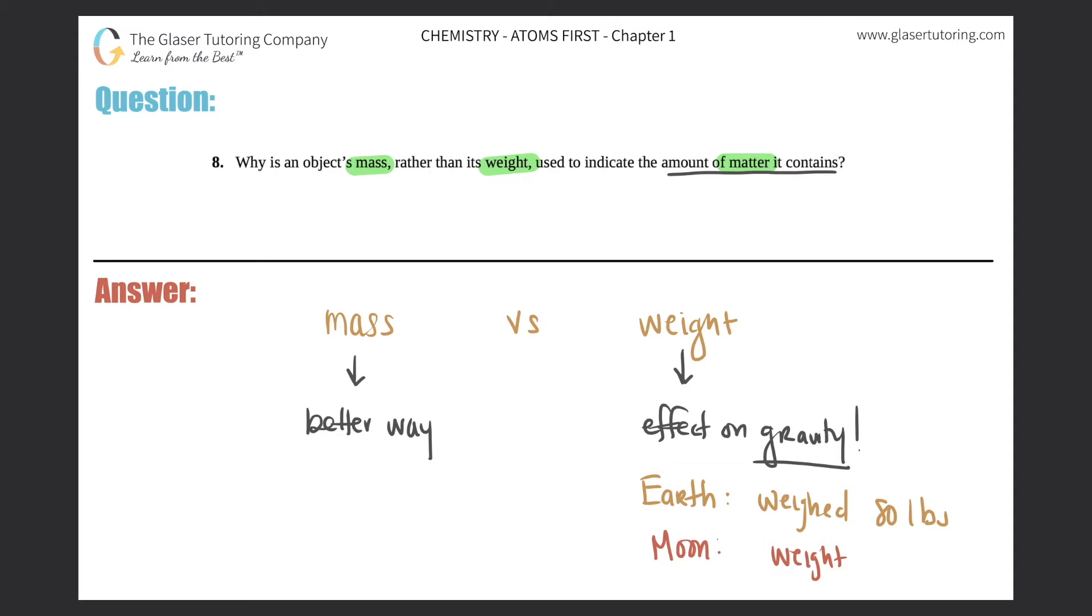However, if we put that same object on the moon, well the weight, specifically the word weight, would be much less. Let's just say it's, I don't know, 30 pounds. But the weight on Earth and the weight on the moon would be completely different.